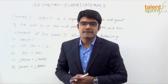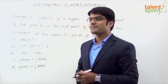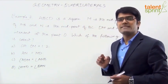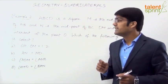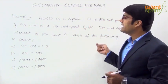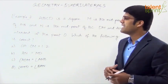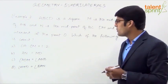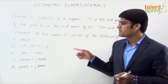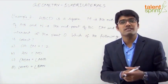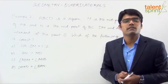Let us now discuss example 7, which is based on a square. The question says ABCD is a square, M is the midpoint of AB, and N is the midpoint of BC. DM and AN intersect at the point O. We have to find out which of the given answer options is correct based on the given question.